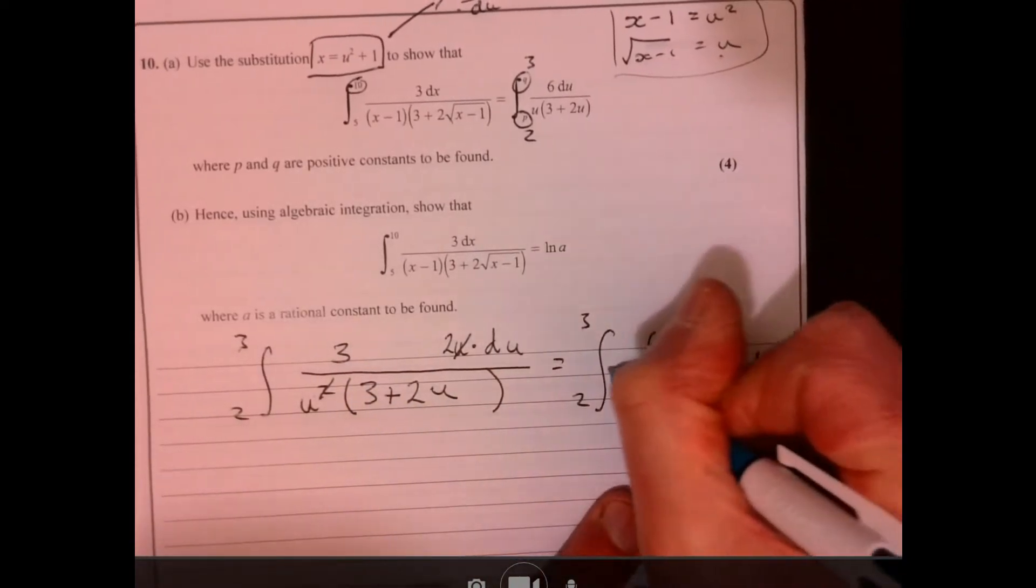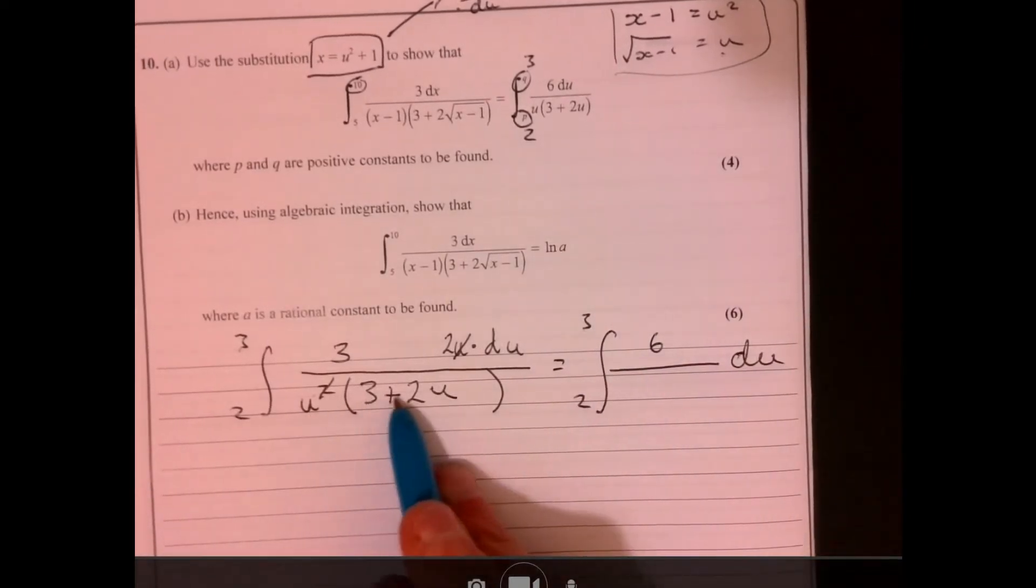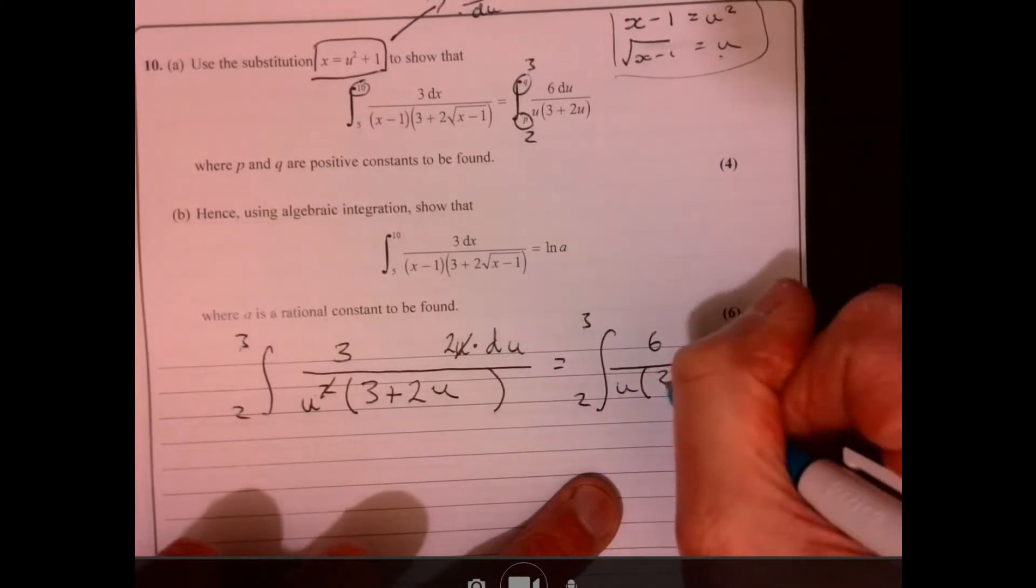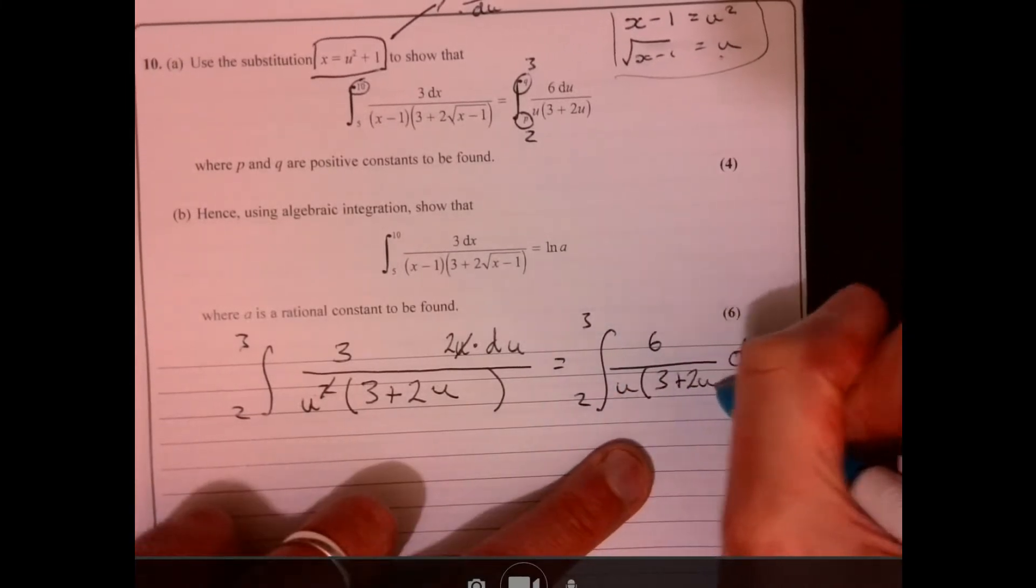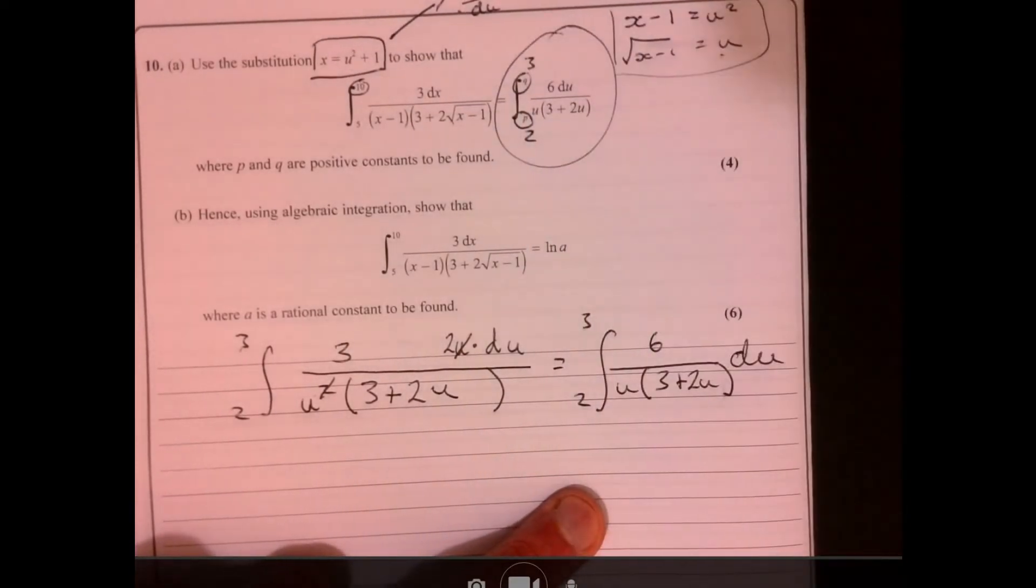And then it would be 3 times 2. So that's 6. Remember, it's du now. And then we've got u times 3 plus 2u. All right. Look.